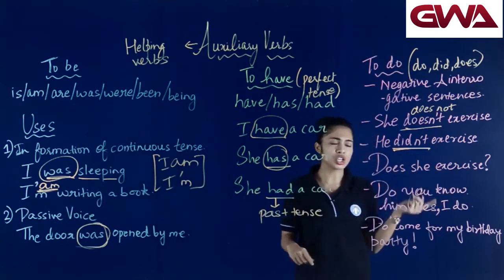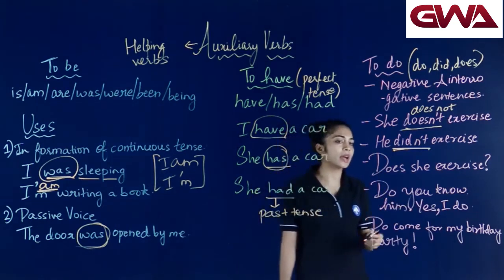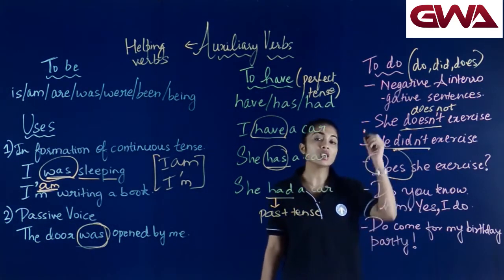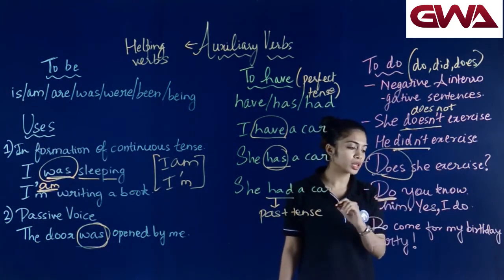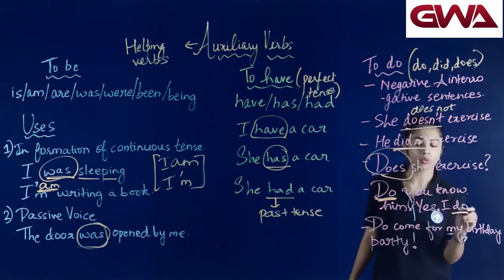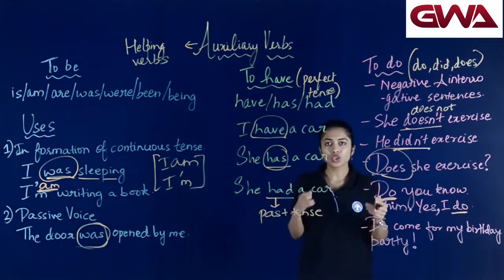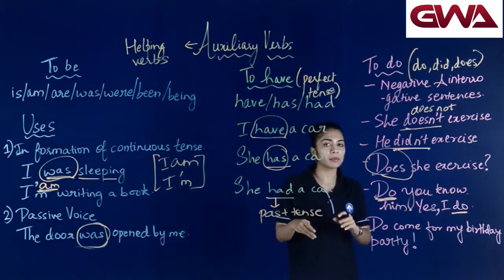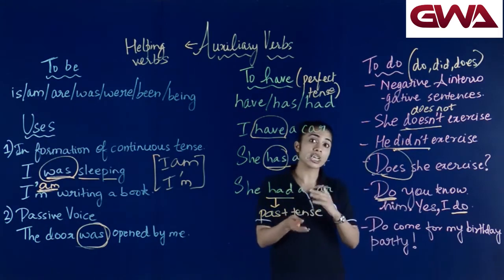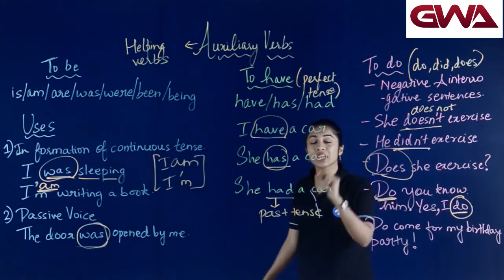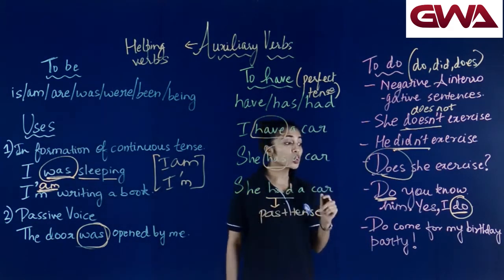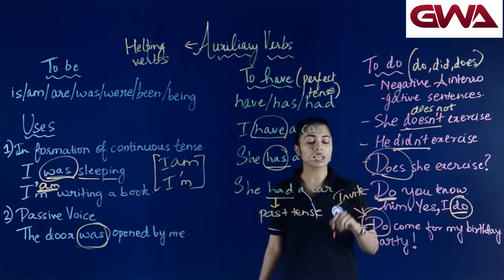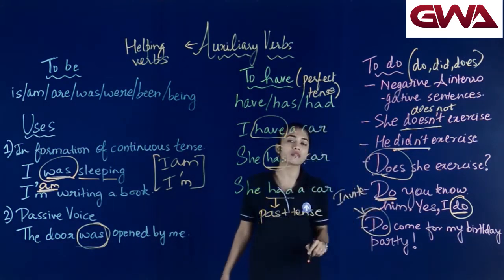Third sentence को देखते हैं: Does she exercise? यह interrogative sentence है — हम question ask कर रहे हैं with the help of does। Do you know him? Yes, I do। To do auxiliary verb पहले question पूछ रहा है, और जवाब में I do — repetition avoid करने के लिए do का इस्तमाल किया जाता है। Do come for my birthday party — यहाँ पे do का इस्तमाल किसी को invite करने के लिए किया है।